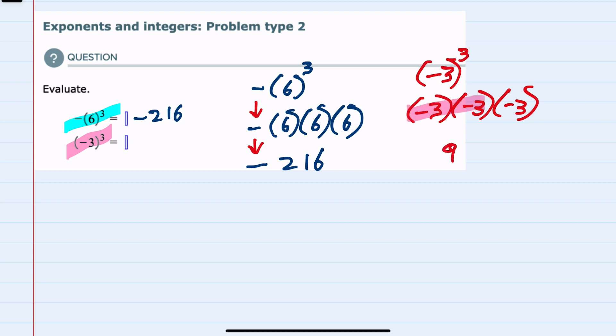Bringing down the last negative 3, when I multiply here, a positive 9 times a negative 3 would give me a negative 27, so we have evaluated the second expression as well.